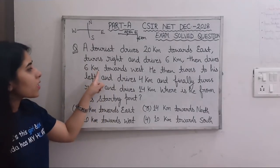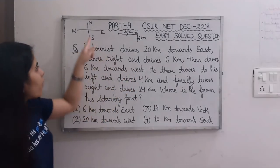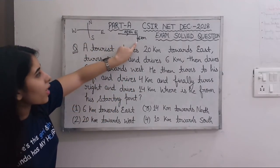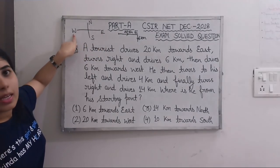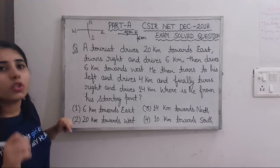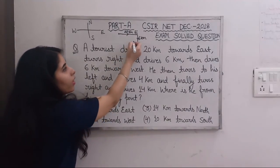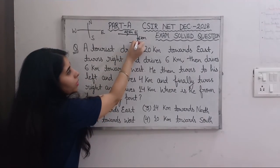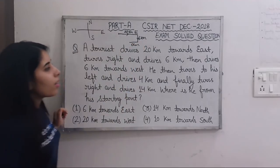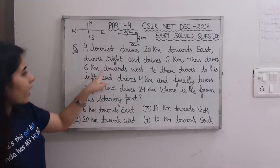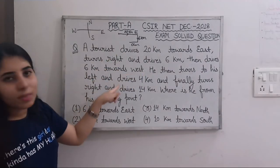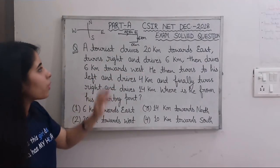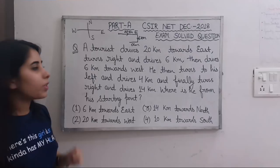Then he drives 6 kilometers towards west. So now we look at the west direction — west is opposite to east. We move 6 km towards west from the current position. We have drawn the movement up to this point for all the statements so far.